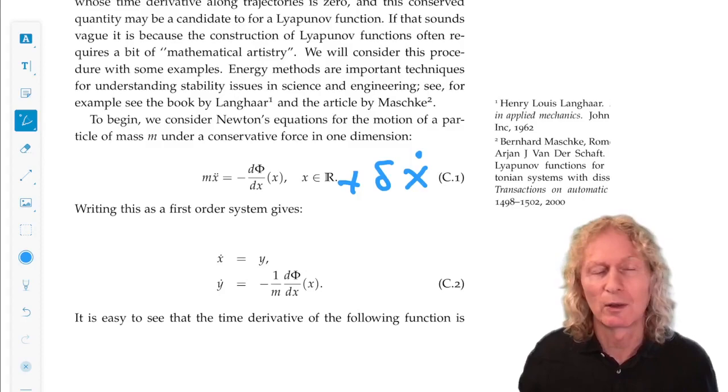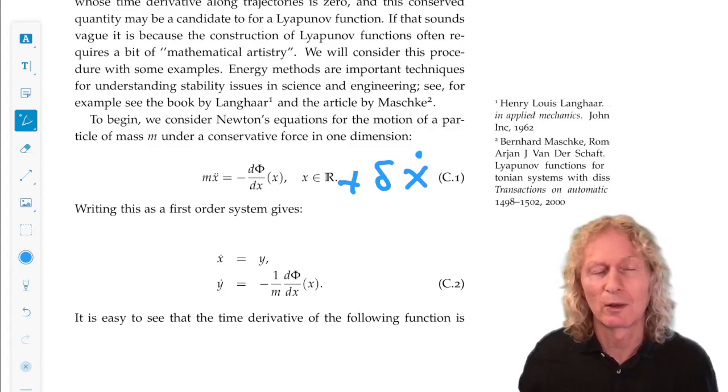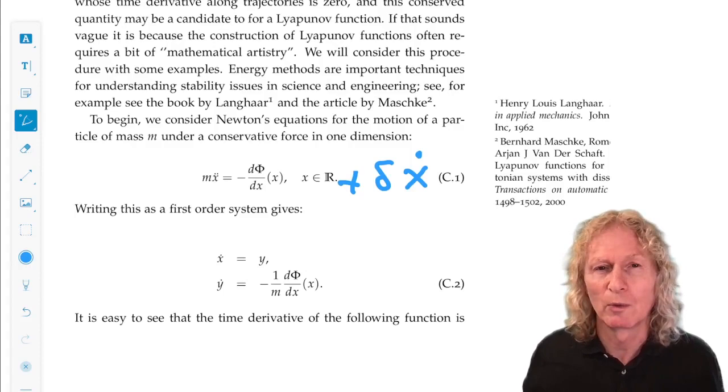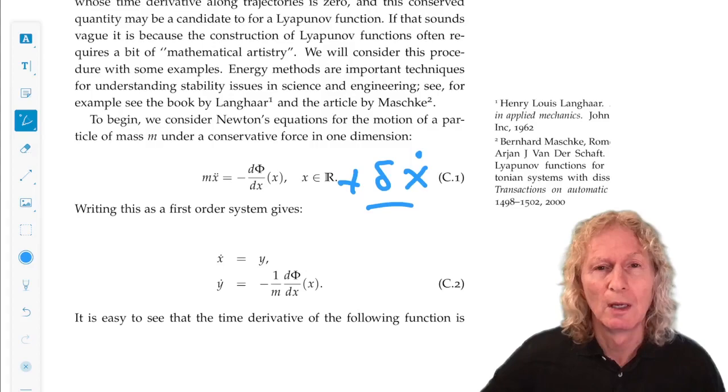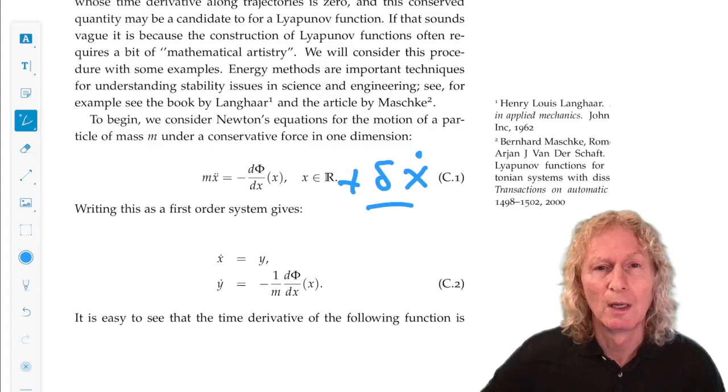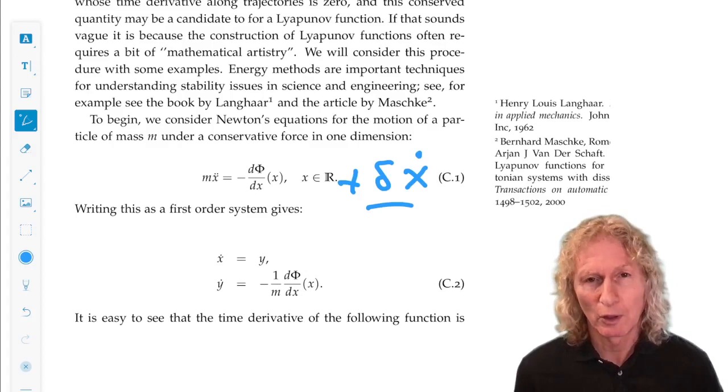And this is one of the main ways that we find Lyapunov functions. We have a system, we can say, okay, if we look at this part of the system, if we look at only these terms, that looks like an energy and it's conserved. And then this extra term breaks the conservation of energy, damping in mechanical systems. And so why don't we try to use this energy-like function as a Lyapunov function. And that's often how we start.